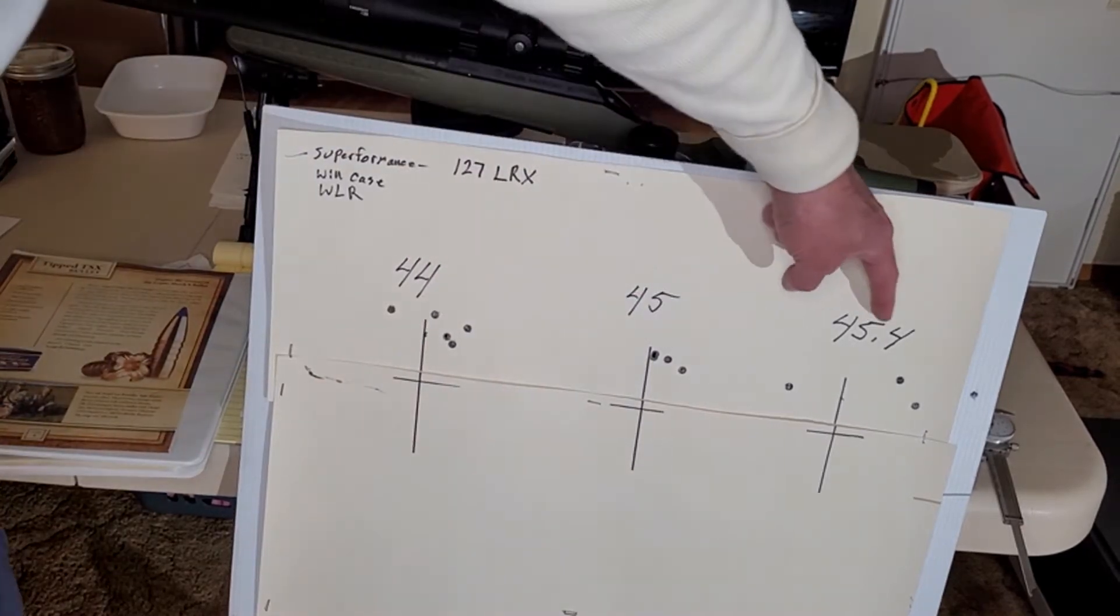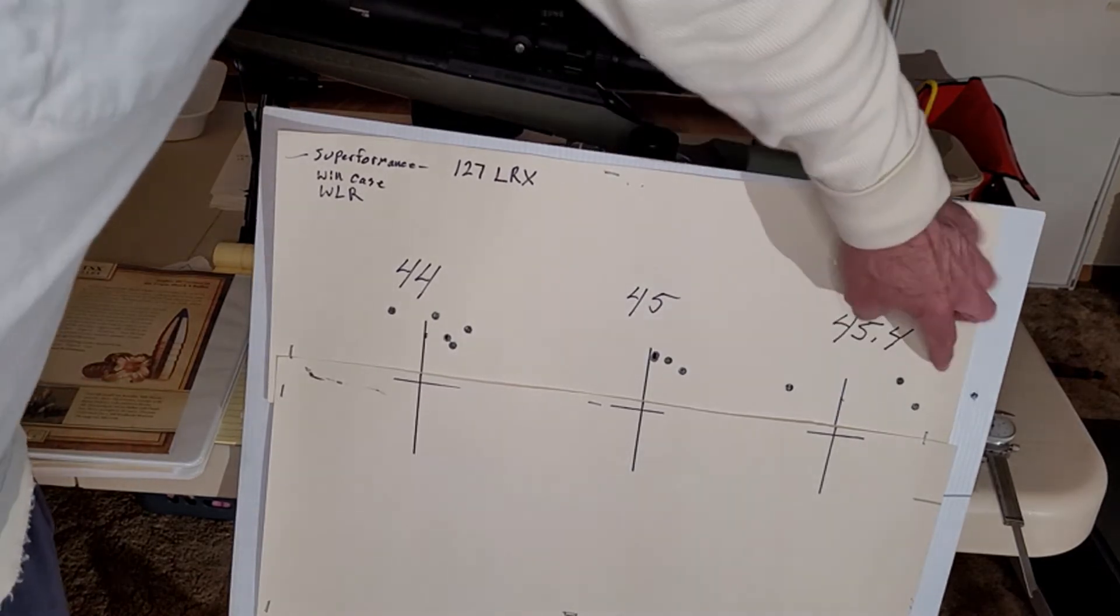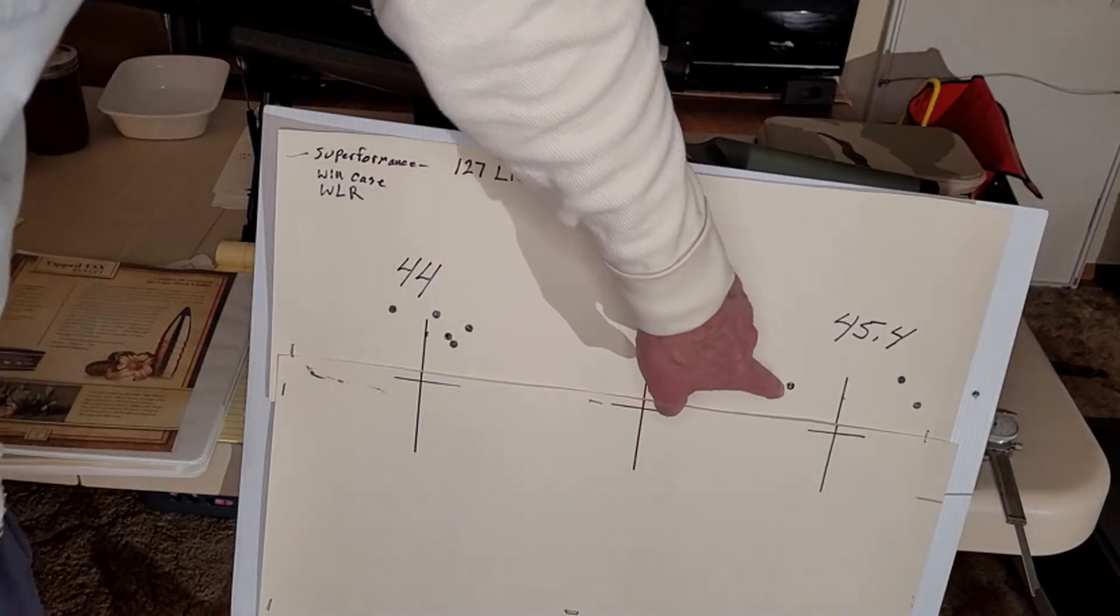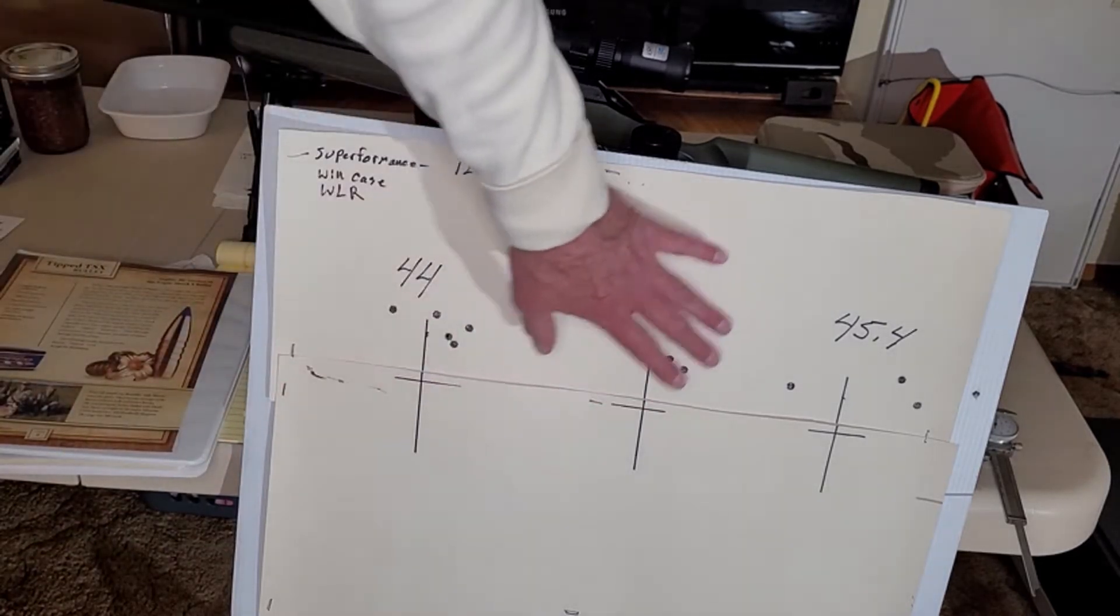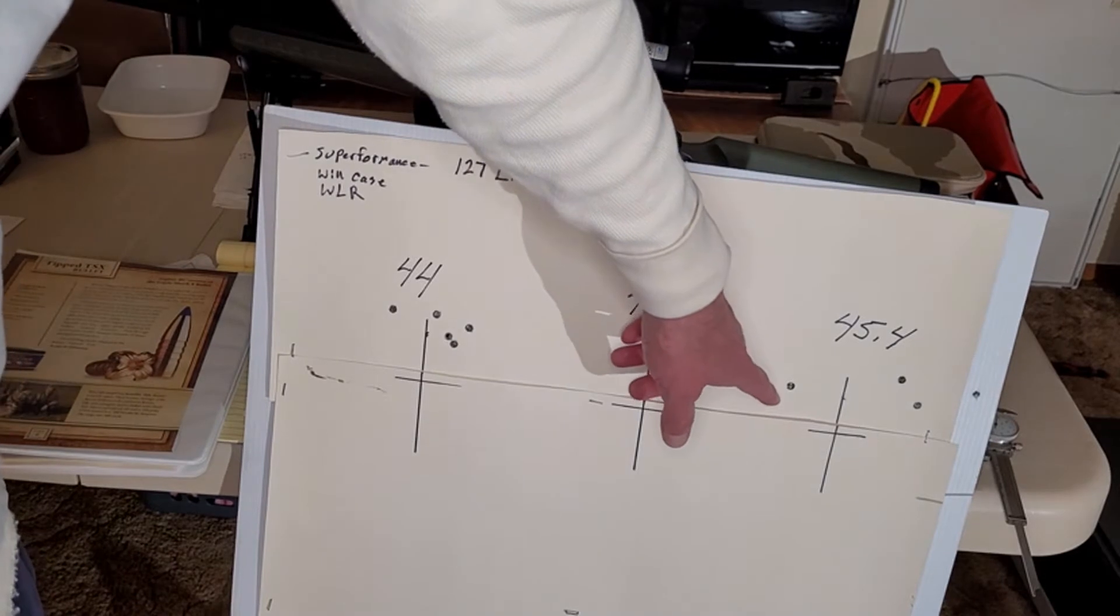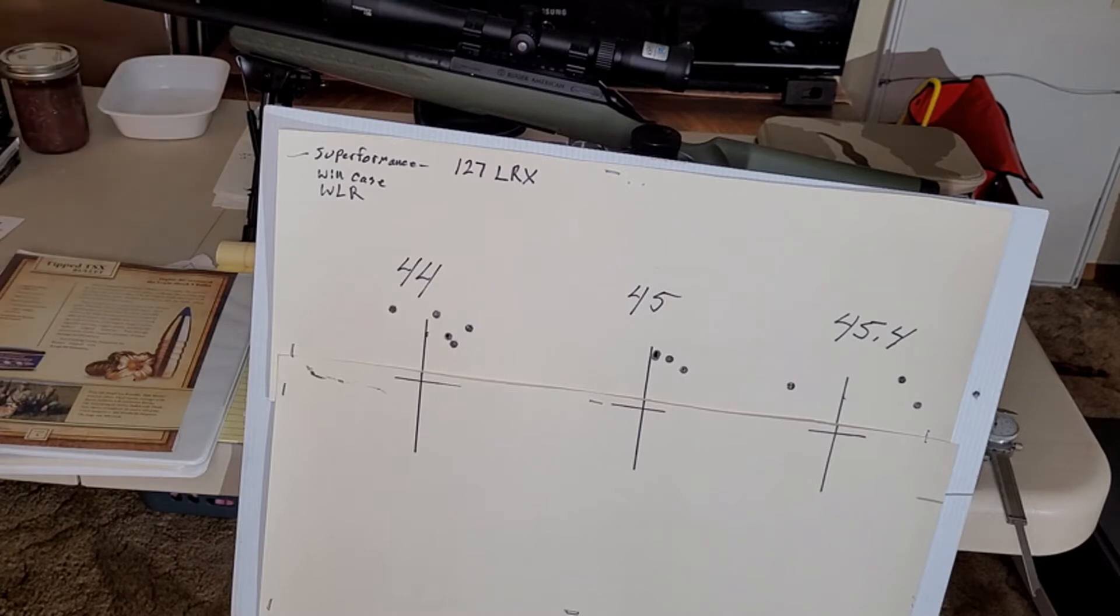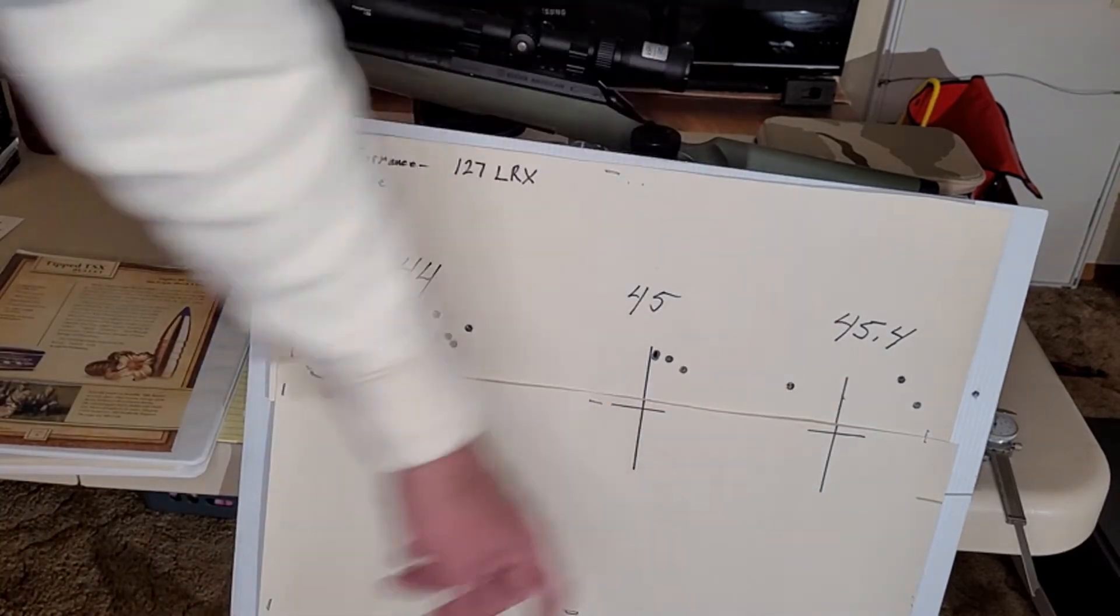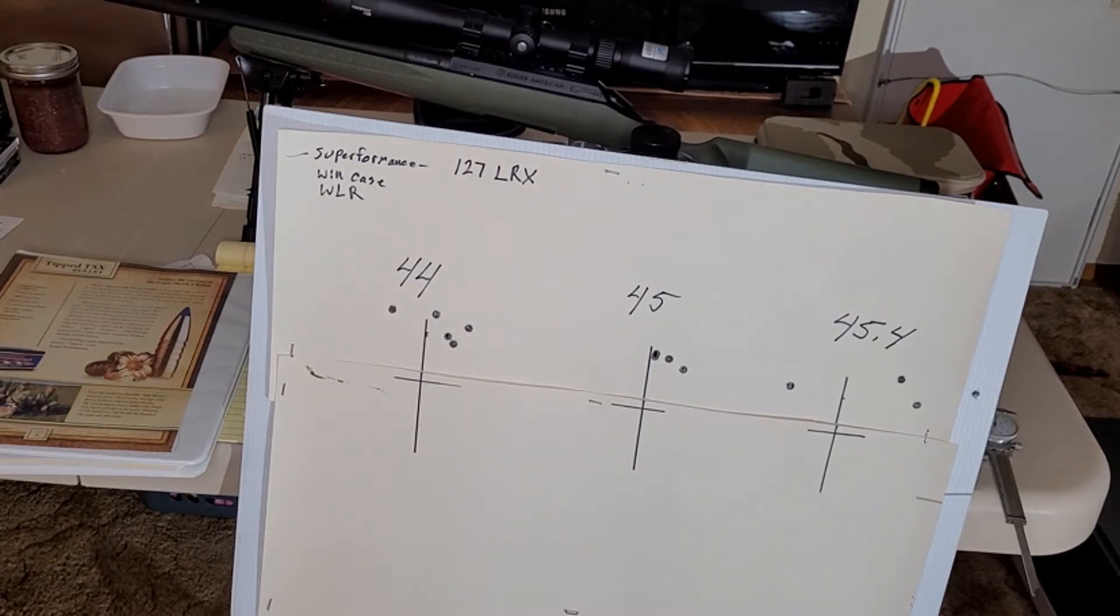Then I went to 45.4. Look at the lateral stringing I got. When I shot this first round, it felt like a shotgun and I had already shot my .25-06 15 times. The brass has no primer flattening, no ejector swipe, no nothing. I have no pressure signs whatsoever. I just feel like I've shot a 12-gauge twice.